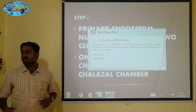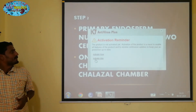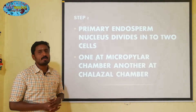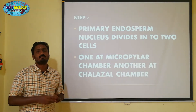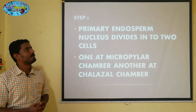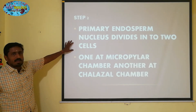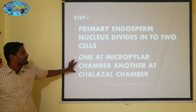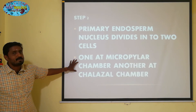Step 2: The primary endosperm nucleus further divides. This is a triploid condition. They are divided by mitosis, so the two cells are divided — one is a micropylar chamber and the other is a chalazal chamber.